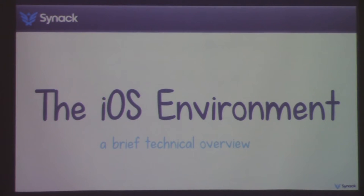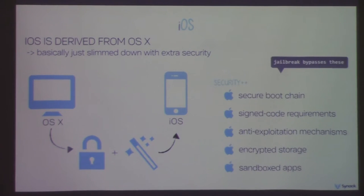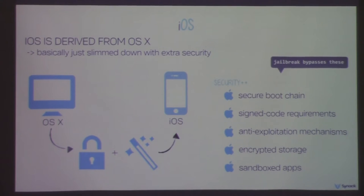Let's talk about the iOS environment. iOS is Apple's mobile operating system, based on OS X, but with extra security enhancements, touchscreen-specific features, and mobile-specific capabilities. This extra security has one goal: to ensure only Apple-approved code runs on the device. Security features include a secure boot chain, signed code requirements, anti-exploitation mechanisms, encrypted storage, and app sandboxing. This locks down the device pretty well, preventing malware and a lot of attacks.